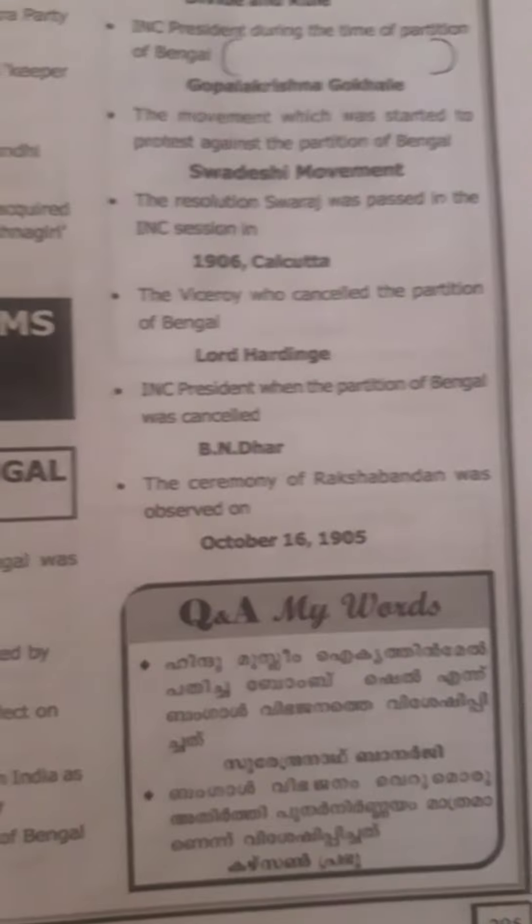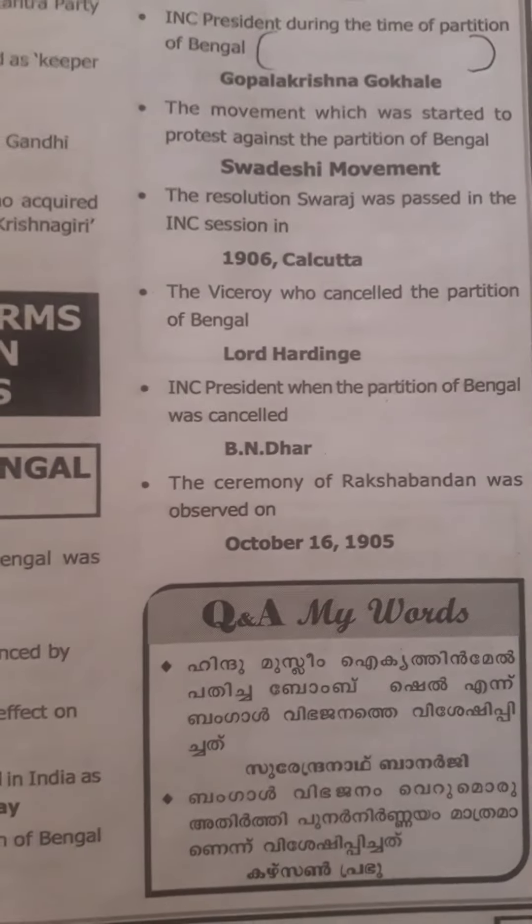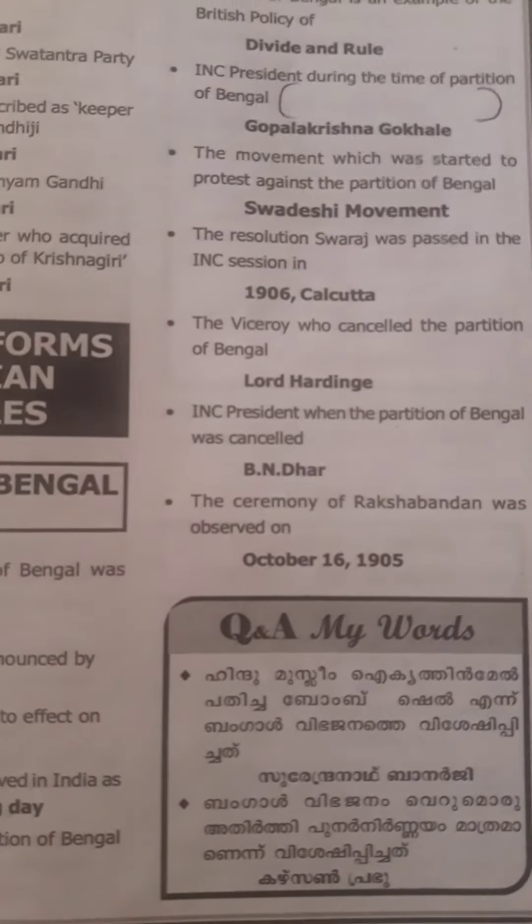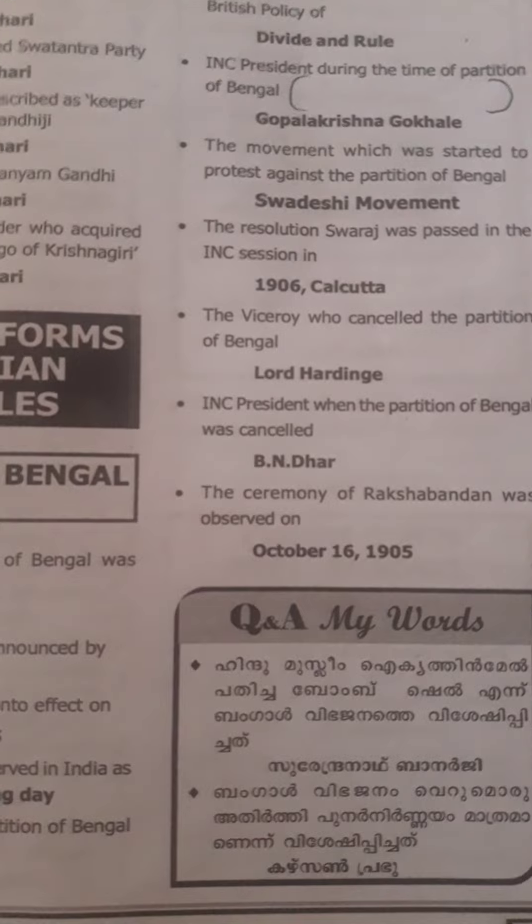Hindu-Muslim unity was claimed in 1907. The Swadeshi resolution was cancelled.